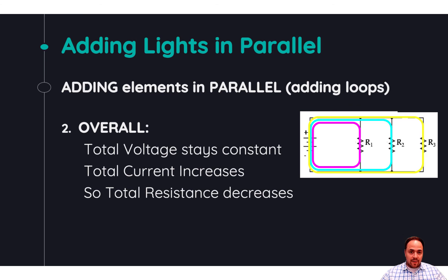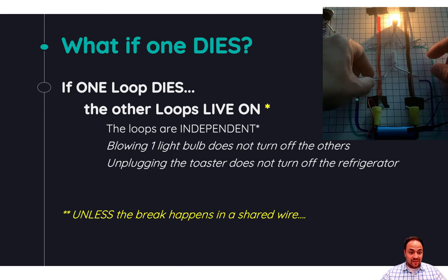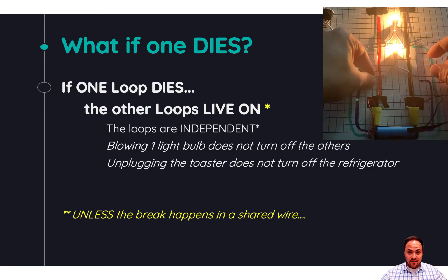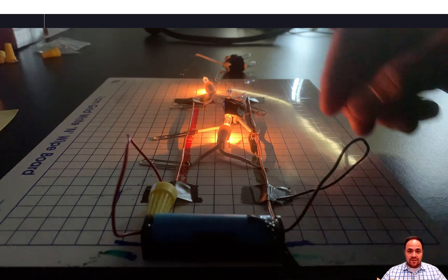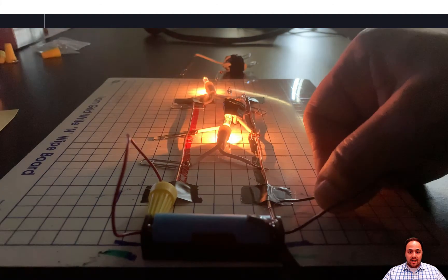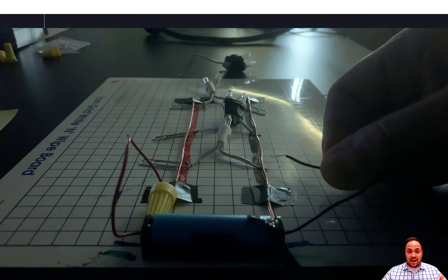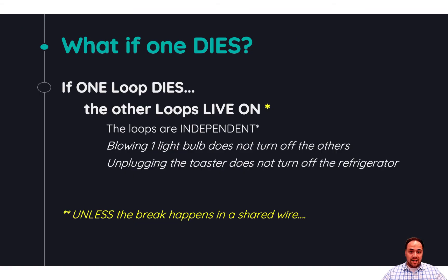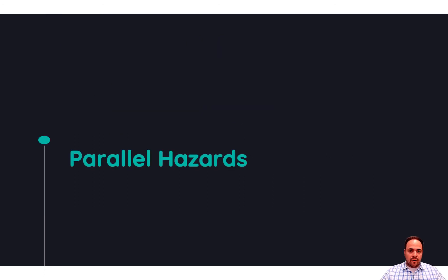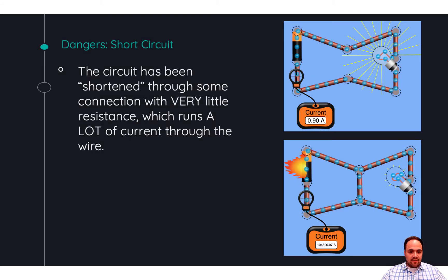If one of the loops dies, it doesn't affect the other loops — we saw this in the demo, and that's a good thing because if something goes out in your house on one loop, it won't affect the entire house. The only time there is a problem is if the break is along one of those shared pathways — the main line where all loops are sharing. If that goes out, it shuts down all loops. Otherwise, if something within a loop like a light bulb goes out, the other loops won't be affected.